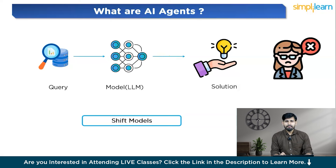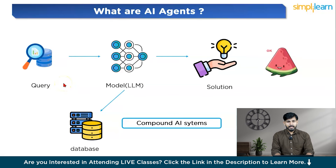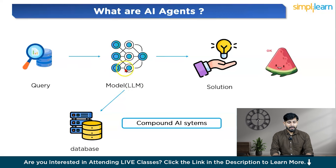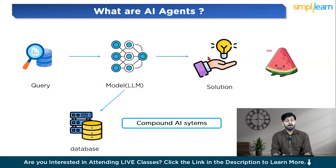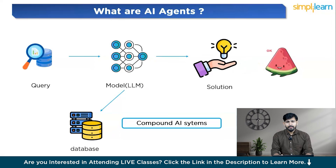Now let's understand a compound AI system — how it is going to integrate with a database, study my data, and then respond to the query. Suppose I give a query like 'how many leaves can I take?' It is going to generate a search query first, then search the database, study the entire data, and then predict how many leaves I can take. This is how compound AI systems work, and the solution will definitely be correct.